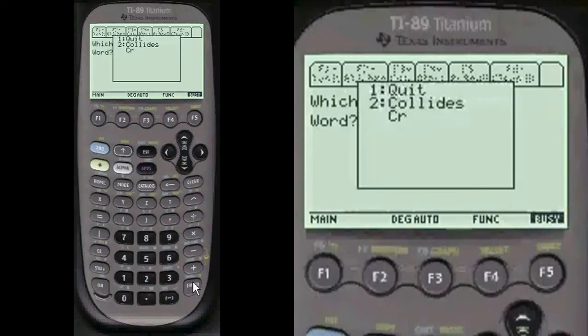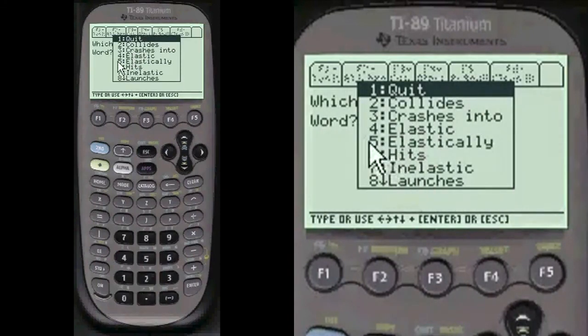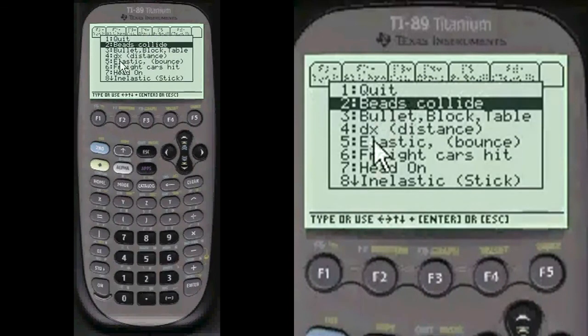So you're going to scroll down here to collision. And this decides which, from other words in the problem, what they're talking about. In this case, number 8, they're talking about a head-on collision. So we're going to choose 2, which is collides. And we're going to do head-on, which is 7.